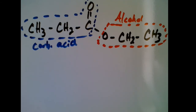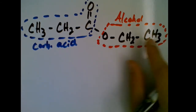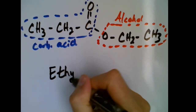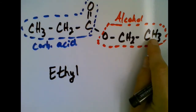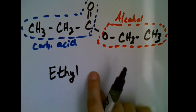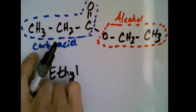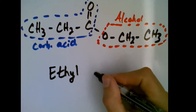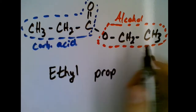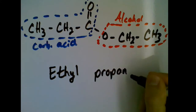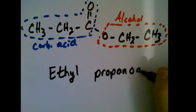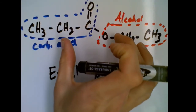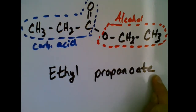So the beginning of the name here is based on these two carbons — we have two carbons in the alcohol group, so the start of the name is going to be ethyl. We then leave a space and write the carboxylic acid part next. There are one, two, three carbons in it, so we use 'prop'. Since they're single bonded to each other we go '-an', and then to show that it's an ester we add '-oate'. So this molecule is called ethyl propanoate.